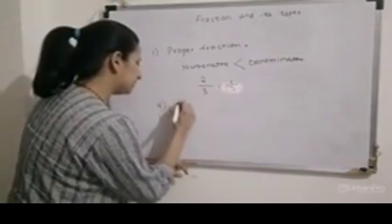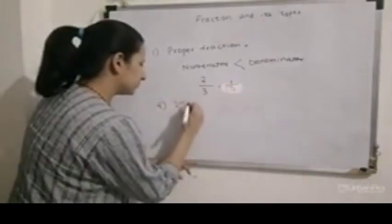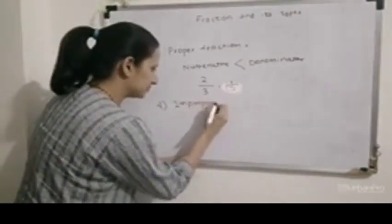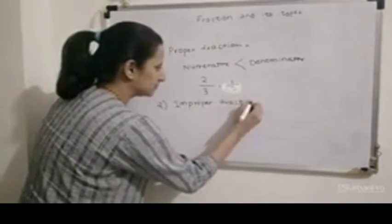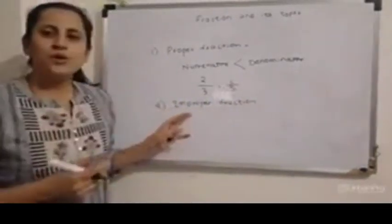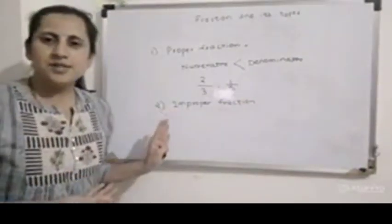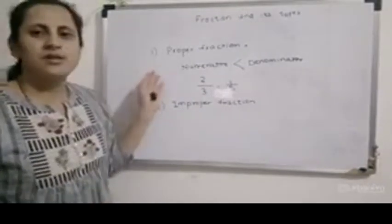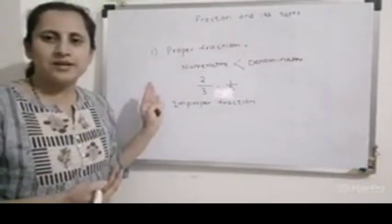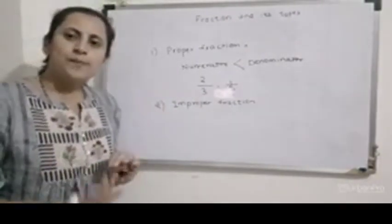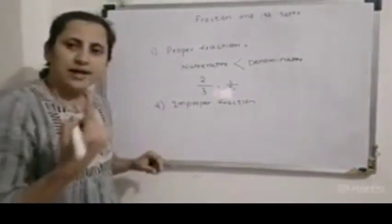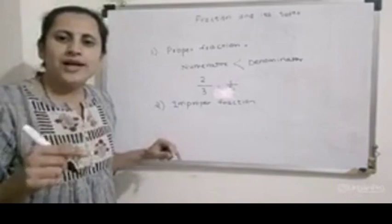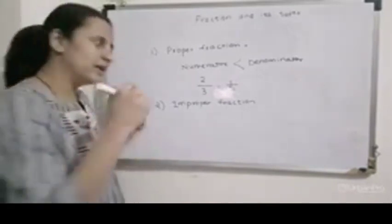The second type is improper fraction. As the name suggests, since in a proper fraction the numerator is less than the denominator, improper is the reverse — so in an improper fraction, the numerator is greater than the denominator.